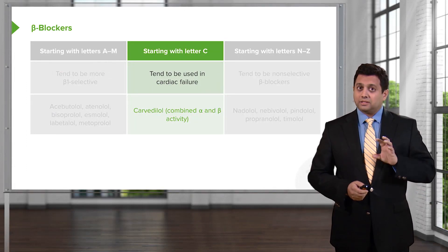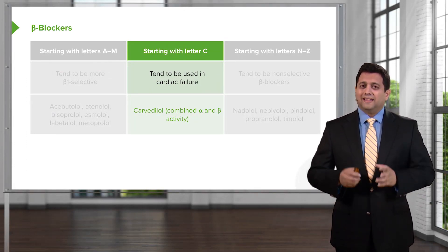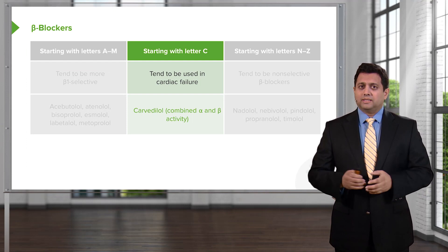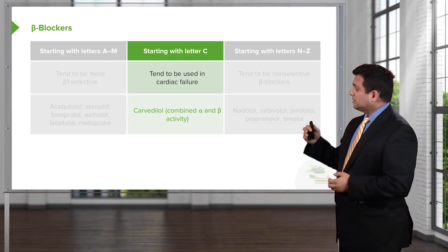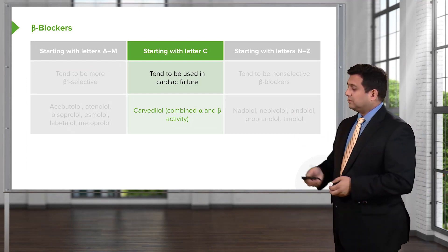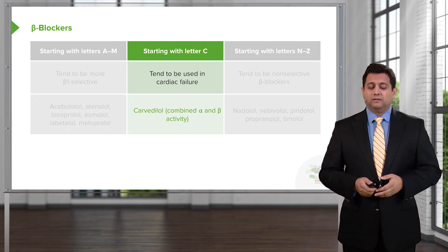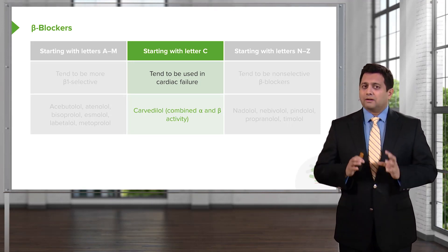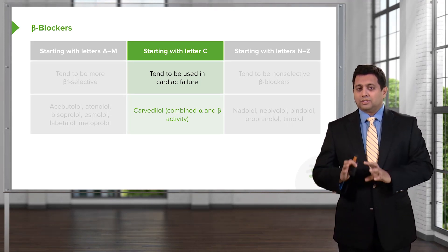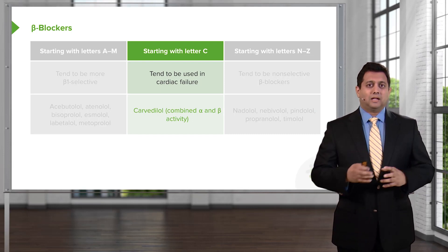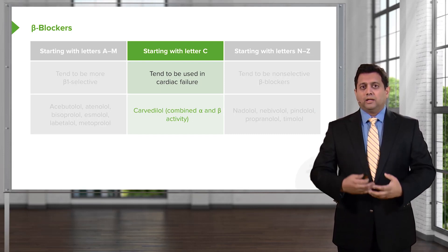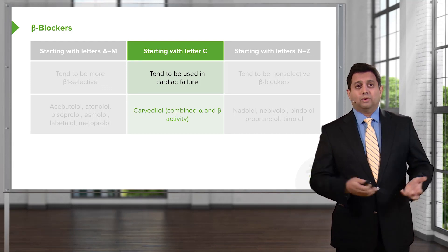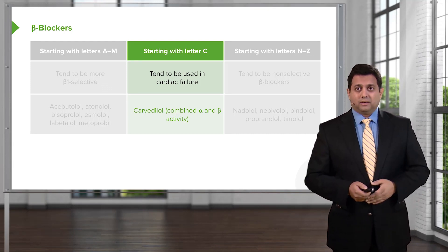Beta blockers that start with C — where C stands for cardiac — are the drugs we tend to use in cardiac failure. The prototypical heart failure beta blocker is carvedilol. Carvedilol is unique because it has combined alpha and beta activity, which helps patients in heart failure seemingly more than other beta blockers.